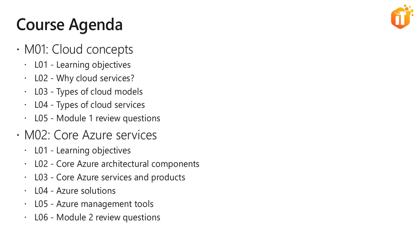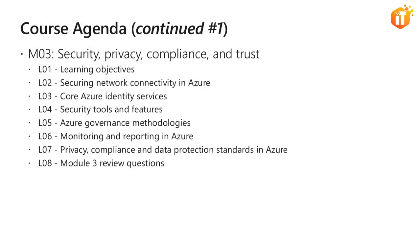After completing the second module on core Azure services, we will move on to the third module covering security, privacy, compliance and trust. Under this topic, we will understand how securing network connectivity is possible in Azure, describing Azure Firewall, Azure DDoS Protection, network security groups, and how to choose the appropriate Azure security solution.